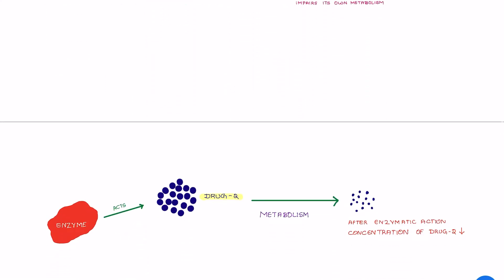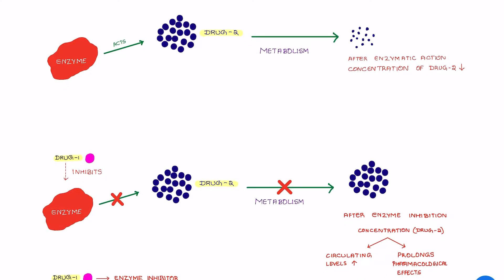Moving on to the next slide, where we can clearly understand that whenever there is an active enzyme, this enzyme is required for the metabolism of drug 2. This enzyme activity will help in the metabolism of drug 2. Once drug 2 gets metabolized by this enzyme, its concentration in the circulating plasma will be reduced — the concentration will go down after enzymatic action.